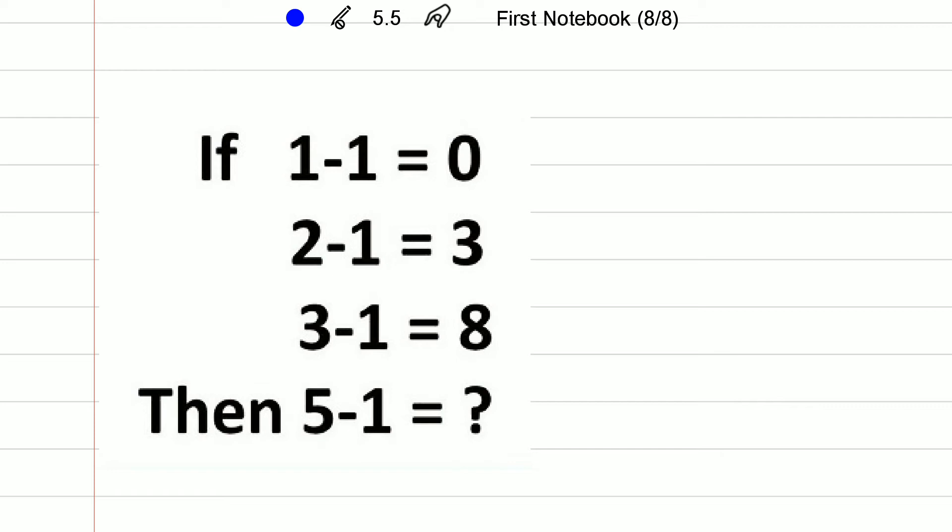they are doing is they are just squaring these numbers. That is 1 square minus 1 square, that will be 0. Same if you apply the second one: 2 square will be 4, then 1 square will be 1, so 4 minus 1 which is 3.